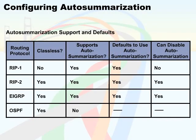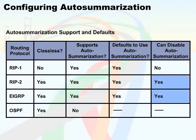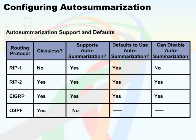An important point to note here is that it is not only classful routing protocols that must use autosummarization. Some classless routing protocols also support autosummarization, with autosummarization configured as the default option. However, these classless routing protocols also allow you to disable the autosummarization feature by using the no auto-summary router sub-command. Have a look at the table to know which routing protocols support autosummarization.